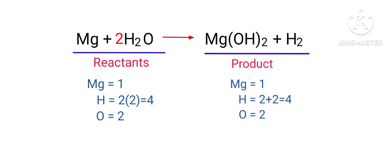The equation is now balanced. There are one magnesium atom, four hydrogen atoms and two oxygen atoms on both sides.